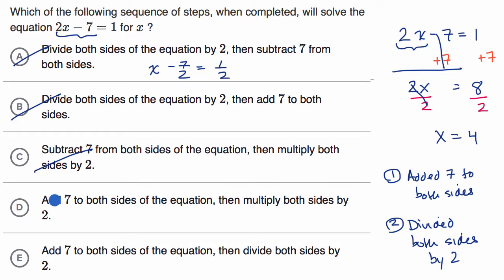Add seven to both sides of the equation, yep, that's what we did first, then multiply both sides by two. No, it's going to be then divide both sides by two. Add seven to both sides of the equation, yep, that's what we did first, then divide both sides by two. That's exactly what we did, and that will get you solving for x. They were a little bit tricky here because they put the last choice here, so we had to work through all of them to find the one that actually worked.